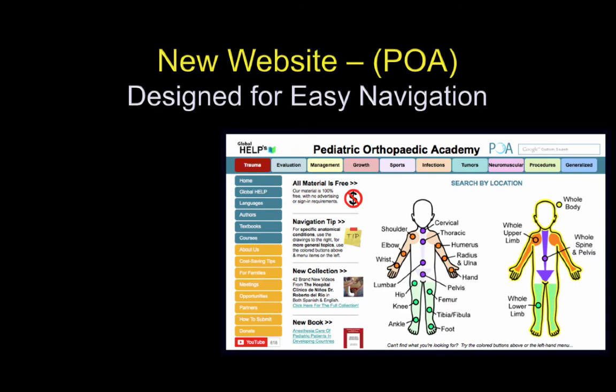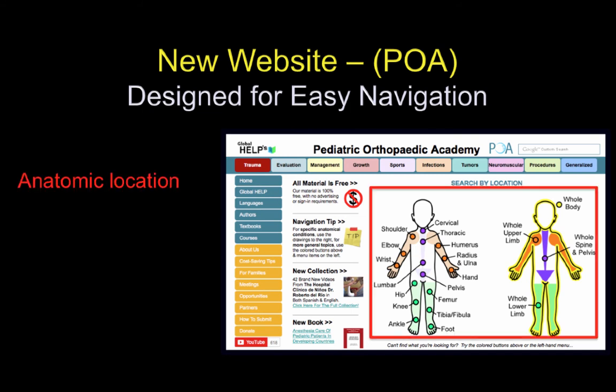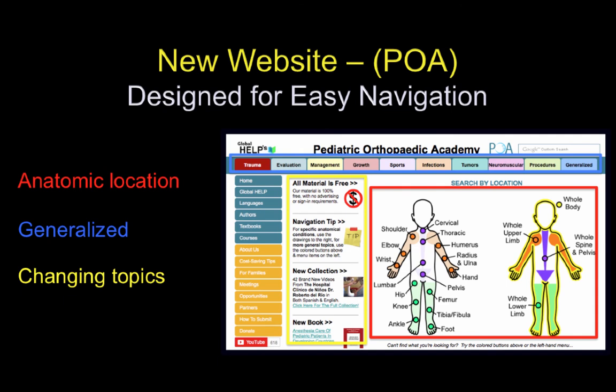We have a new website called POA, or Pediatric Orthopedic Academy, and it's designed for ease of navigation. You first find the material, if it's anatomically located, on the figure. And then if it's not, you go to the top bar where you have generalized options, or you can go to changing topics in the yellow area, or to special searches on the far left.